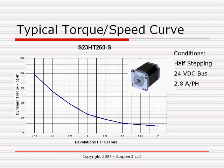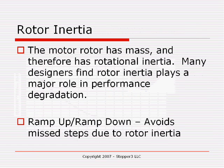For every torque speed curve, the manufacturer will give you the conditions under which that curve was measured, because voltage plays a significant impact, as does the type of driver used. In this case, the curve was done with a half-stepping driver, a 24-volt DC bus voltage, at the rated current of 2.8 amps per phase.